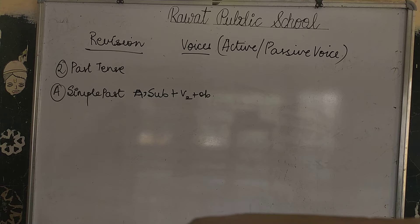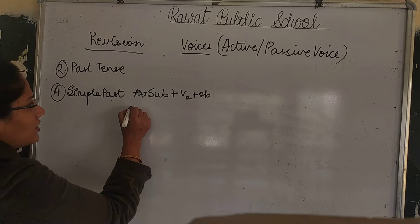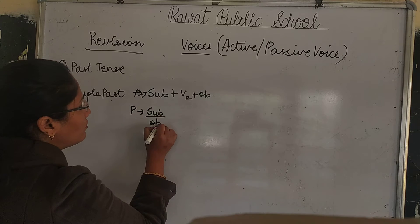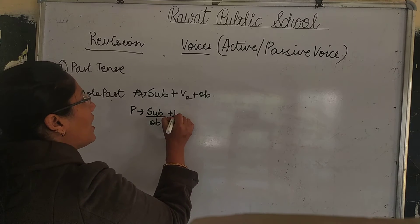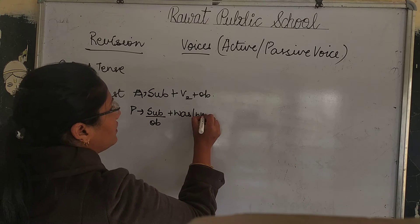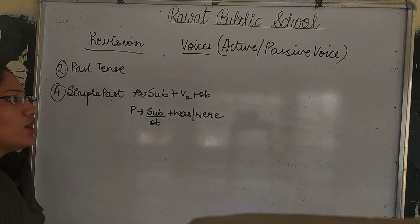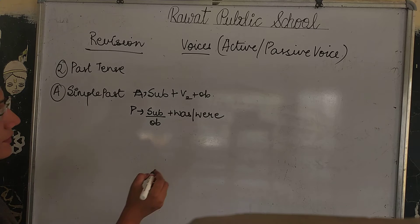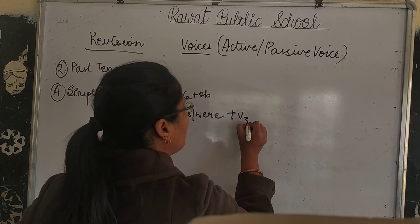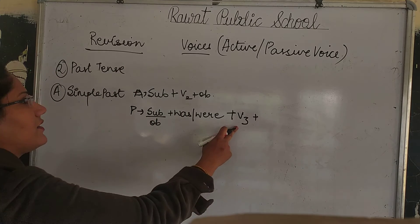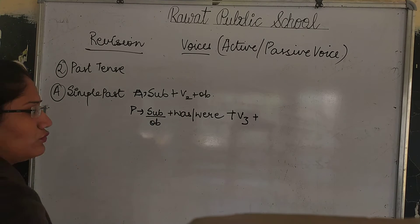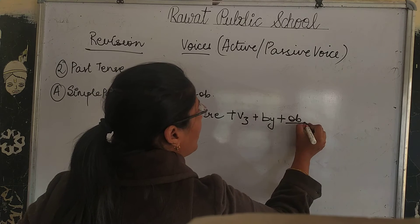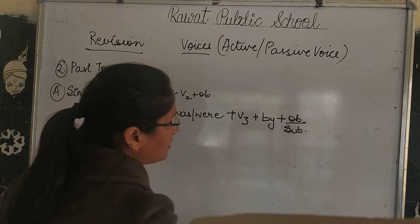Now when we change active to passive, we use: Subject plus was/were plus third form of the verb. Active comes first, then 'by', then the object. The object in the active sentence will become the subject in the passive sentence.